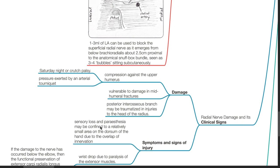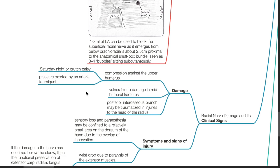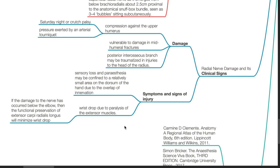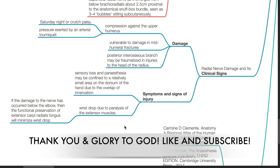Radial nerve damage and its clinical signs. It can be damaged by compression against the upper humerus such as in Saturday night or crutch palsy or from pressure exerted by an arterial tourniquet. The radial nerve is vulnerable to damage in mid-humeral fractures. Posterior interosseous branch may be traumatized in injuries to the head of the radius. Symptoms and signs of injury include sensory loss and paresthesia at the radial nerve territory, which may be confined to a relatively small area on the dorsum of the hand due to overlap of innervation. Wrist drop due to paralysis of the extensor muscles. If the damage to the nerve has occurred below the elbow, then the functional preservation of extensor carpi radialis longus will minimize the wrist drop.